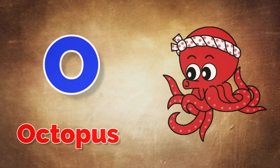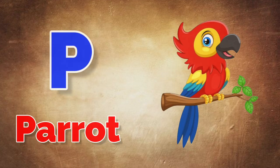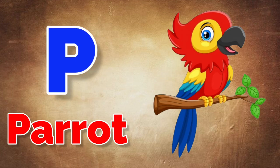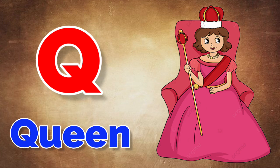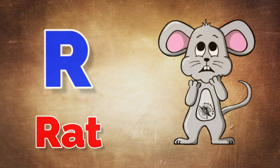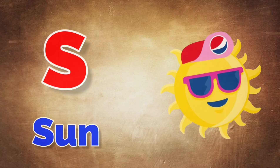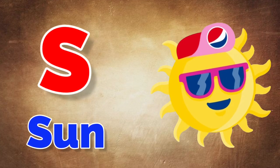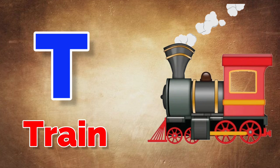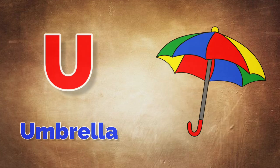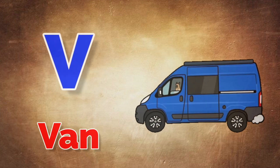O for octopus, B for parrot, U for queen, R for red, S for person, E for friend, U for umbrella, E for branch.